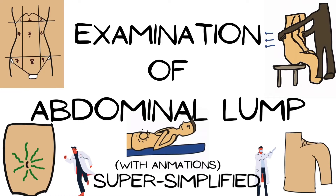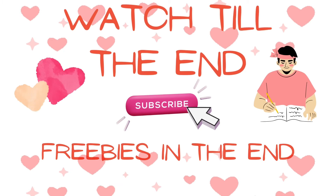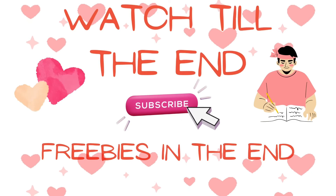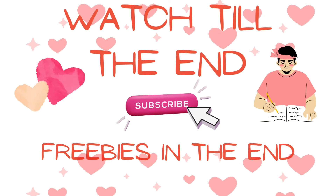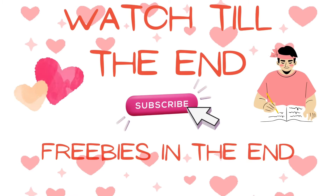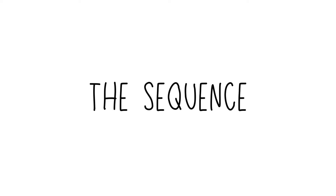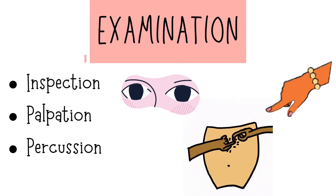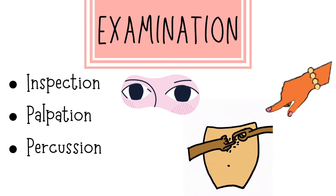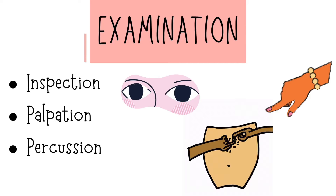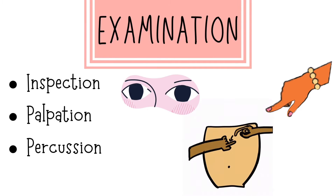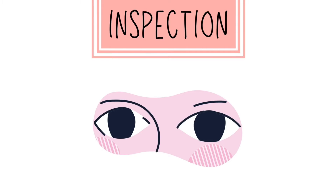In this video we're going to see about the examination of abdominal lump with simplified animations. Let us see the sequence on how to do examination of an abdominal lump. First we have to do inspection, followed by palpation, and then percussion. Inspection is just observing with your eyes, palpation is when you palpate with your hands, and percussion is something you do with your two hands.